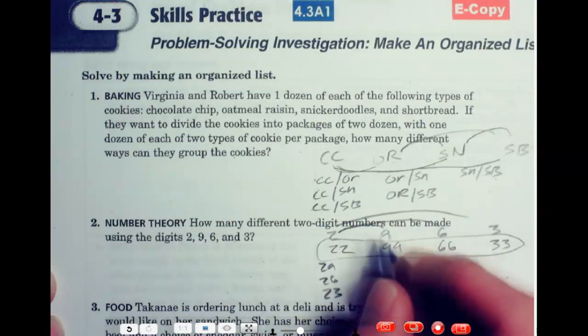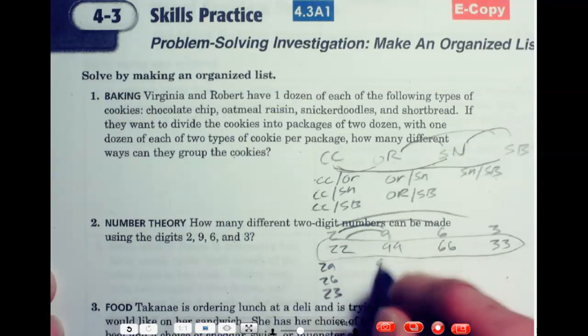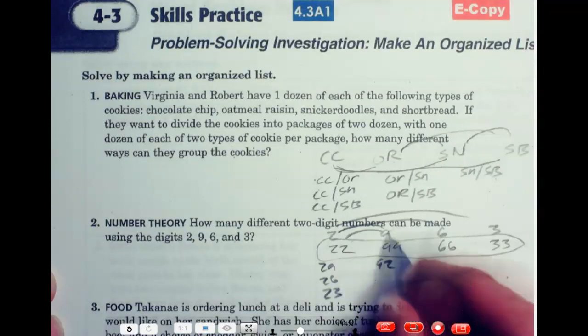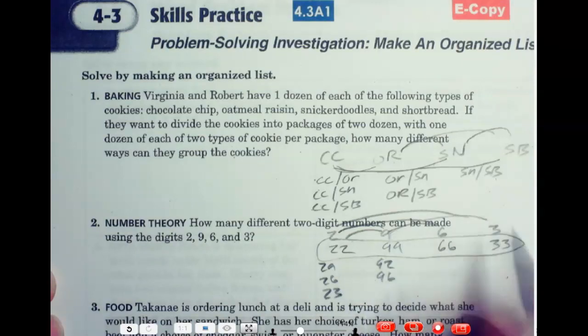Okay. Now, when I get to nine, yes, I could have 92. I can go backwards on this one because 92 and 29 are not the same number. But then I could have 96 and 93 as well. So, you can see I'm filling in the chart.